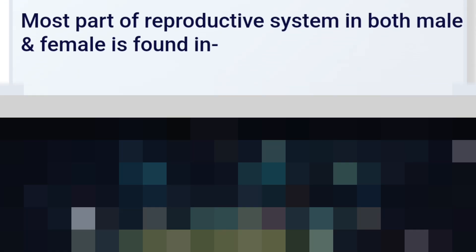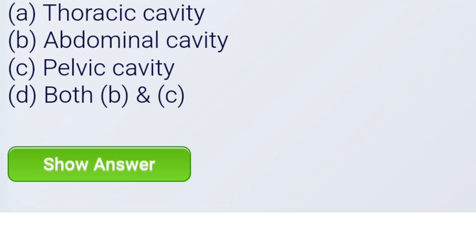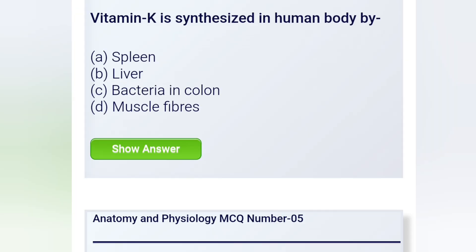Next question: Most part of the reproductive system in both males and females is found in — the correct answer is the Pelvic cavity. Next question: Vitamin K is synthesized in the human body by — the correct answer is Bacteria in the colon.